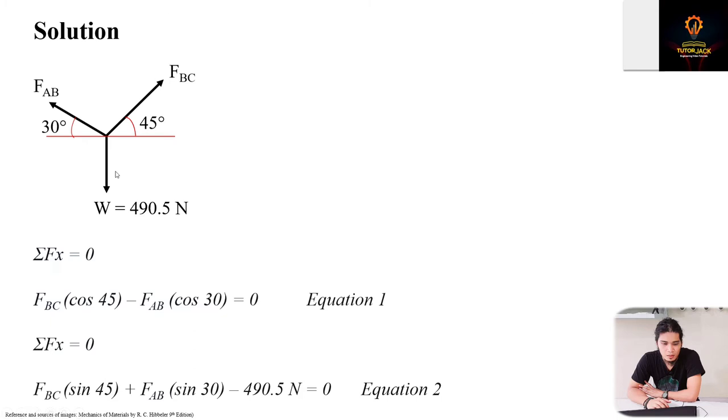Summation of forces along y - we have three forces: the y-components of FBC and FAB, and the downward force due to the weight of the flowerpot. For y we use sine because it's opposite. Sine 45, sine 30. Both y-components are positive because they're upward, and then we have negative 490 because the weight is downward. Upward forces are positive, downward forces are negative. We'll call this Equation 2.